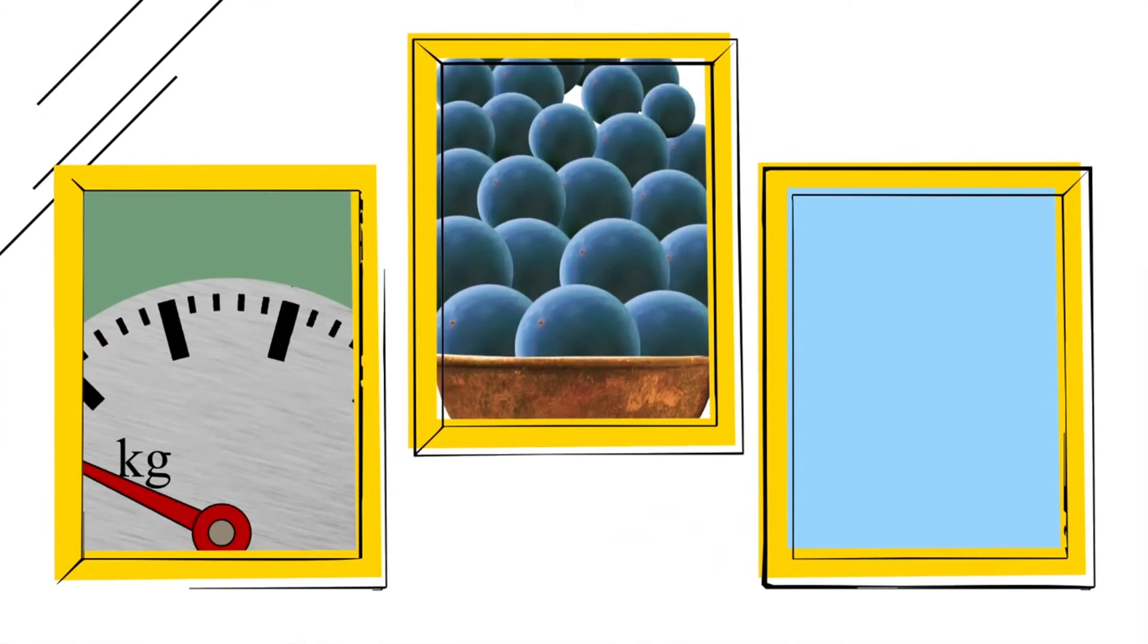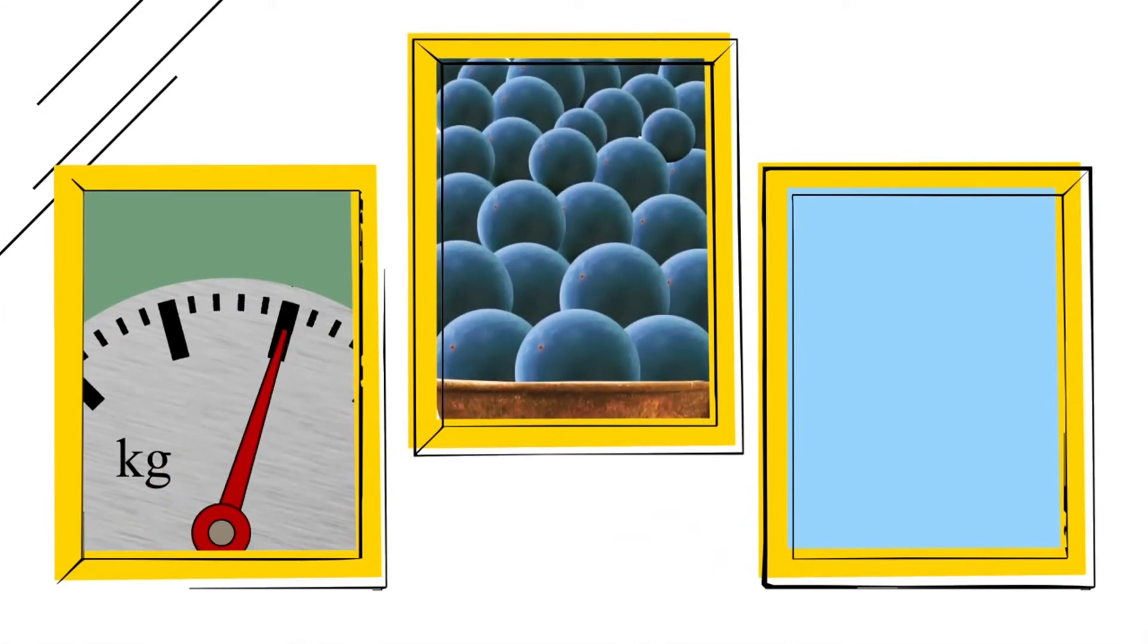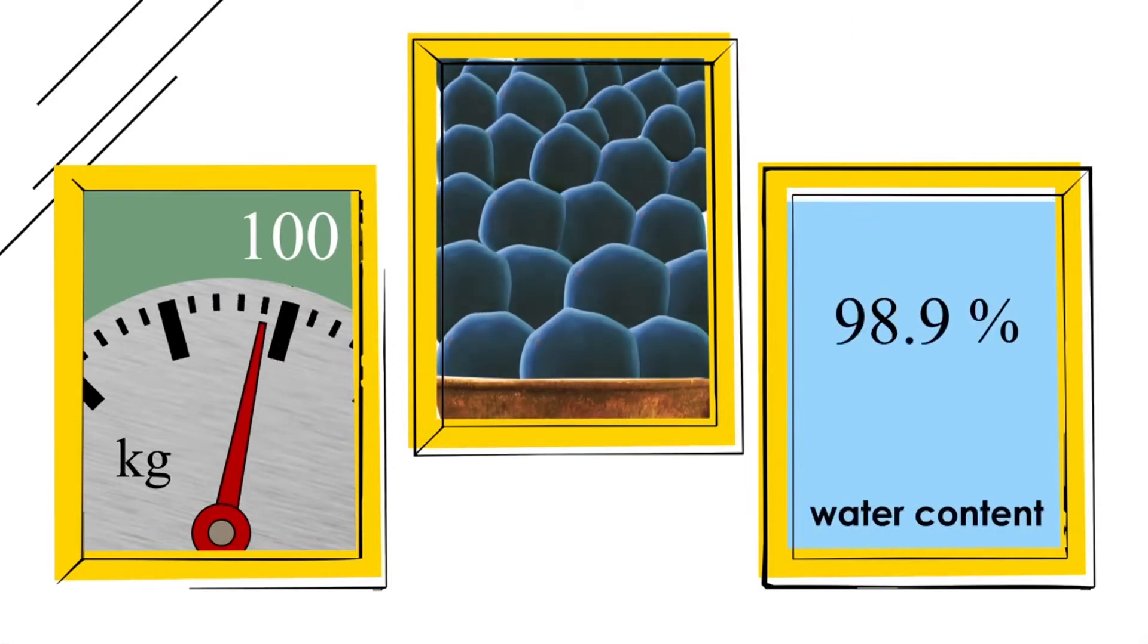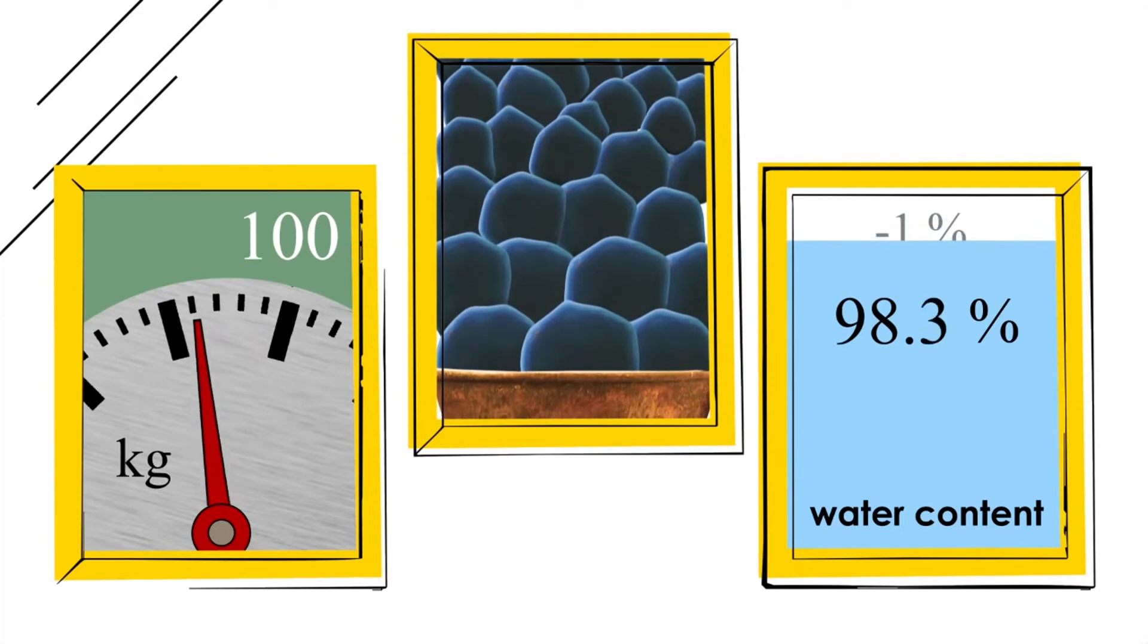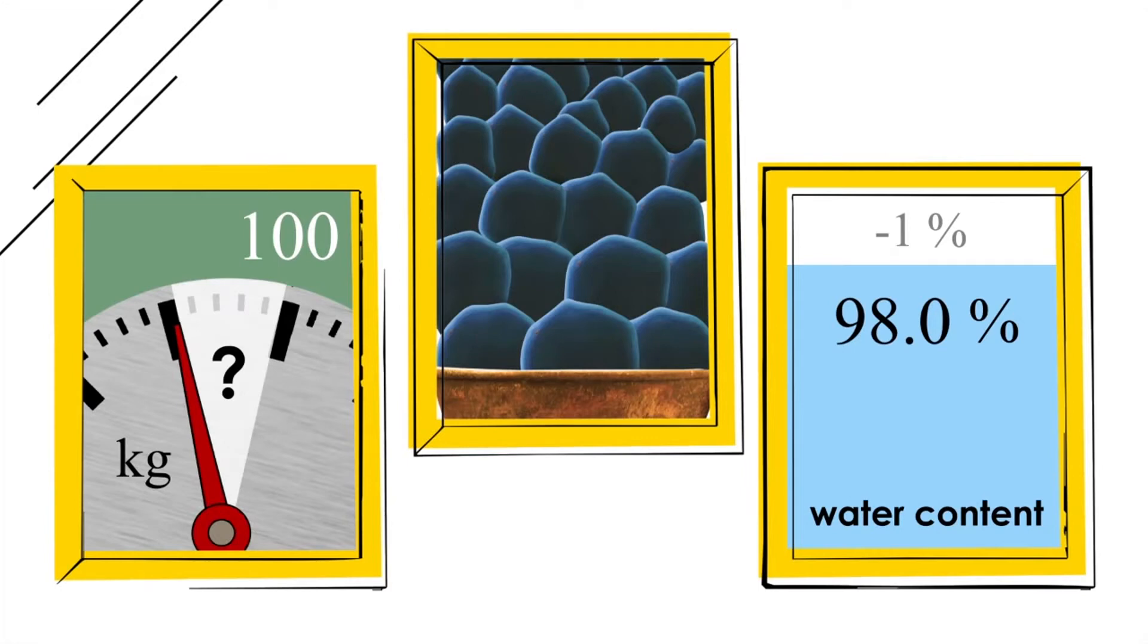Let's say you had 100 kilograms of berries. Over time the berries dried a bit and their water portion lowered from 99 to 98 percent. Can you tell how much was lost of the original 100 kilos?